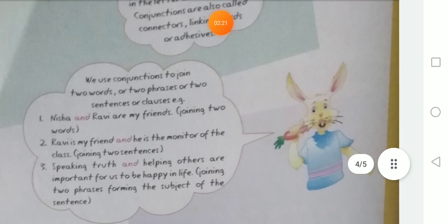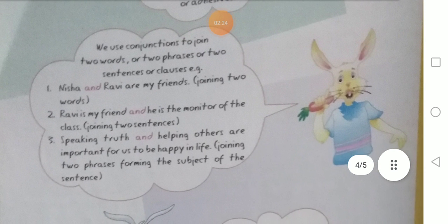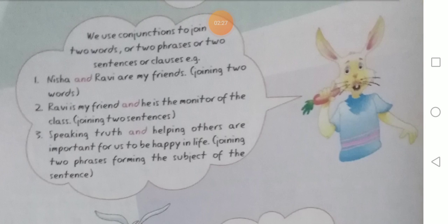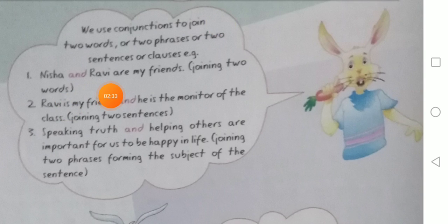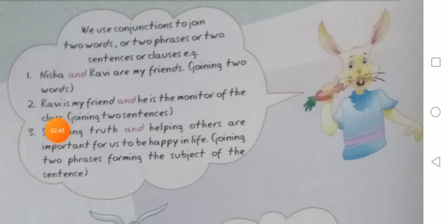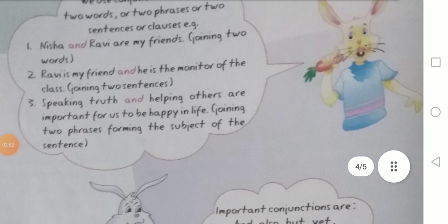देखो, conjunction का इस्तेमाल हम लोग दो words को, दो group of words को, दो sentences को, दो phrases को जोड़ने के लिए करते हैं। For example: Nisha and Ravi — ये दो नाम हैं, दो नामों को जोड़ने के लिए 'and' का इस्तेमाल हुआ — are my friends. यहाँ पर Nisha और Ravi को जोड़ा है। Ravi is my friend and he is the monitor of the class — यहाँ पर दो sentences को जोड़ा है।